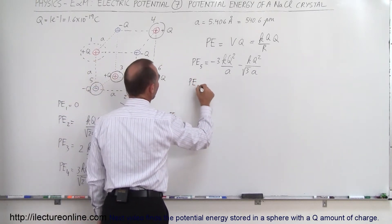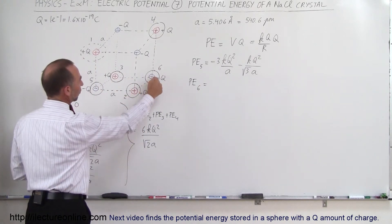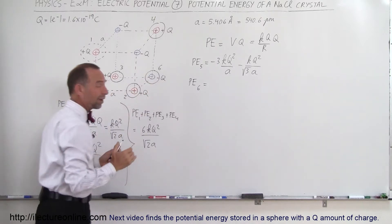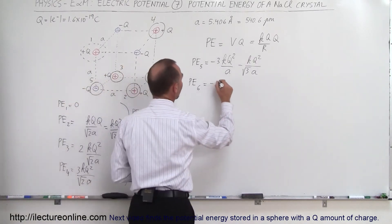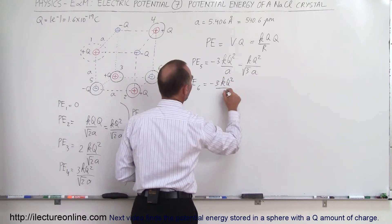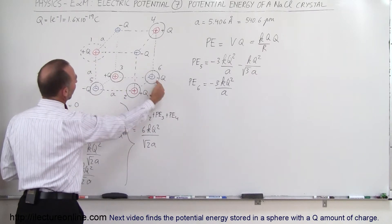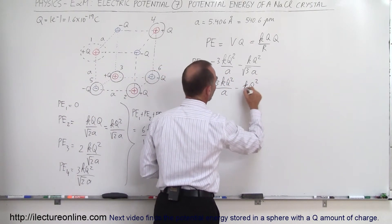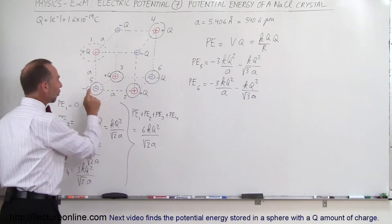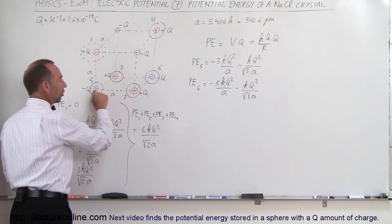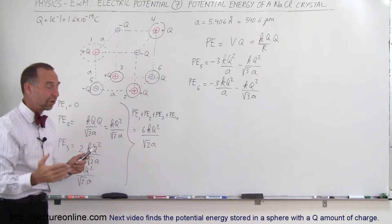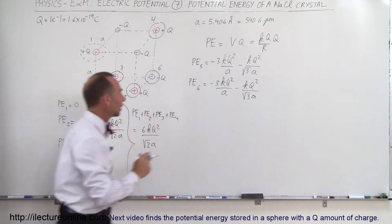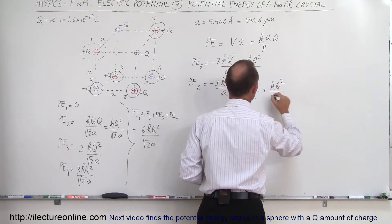Let's bring in charge number six. The potential energy for the sixth one — this charge is the distance A away from three positive charges, so again we have minus 3 KQ squared over A. Then number six is directly diagonally across from the positive charge across the entire cube, so we have another minus KQ squared over the square root of 3 times A. And then there's already one negative charge there; we're bringing this charge close to charge 5, across the diagonal of one face, so the distance is the square root of 2 times A — a repulsive force — so plus KQ squared divided by the square root of 2 times A.